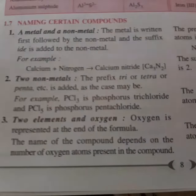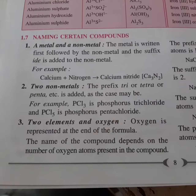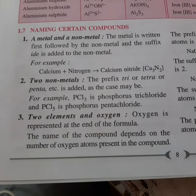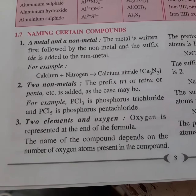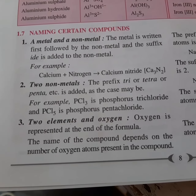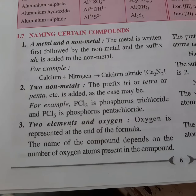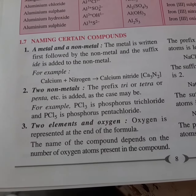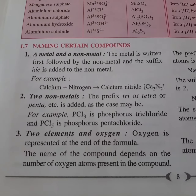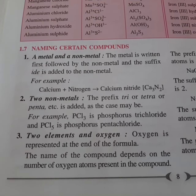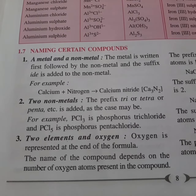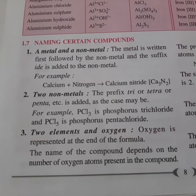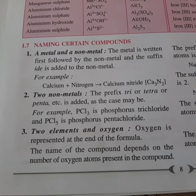There are certain prefix words we can add: mono, di, tri, tetra, or penta, depending upon the number of those non-metal atoms. For example, in this case we are having PCl3, so it is phosphorus trichloride, and PCl5 we will call phosphorus pentachloride.